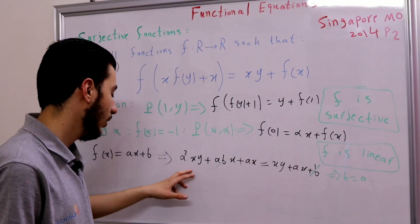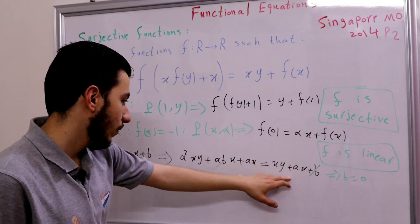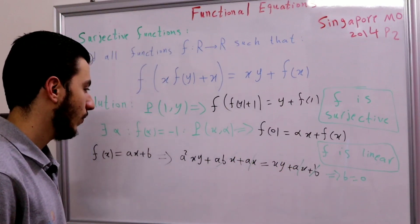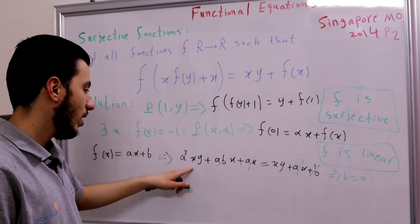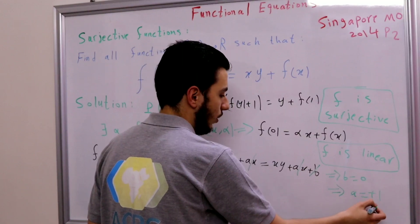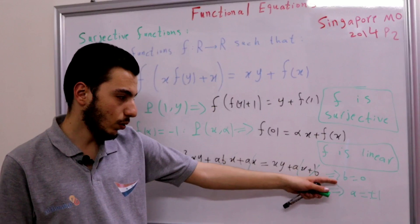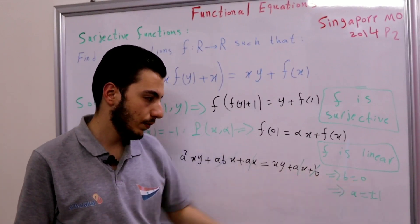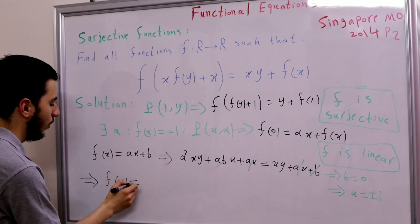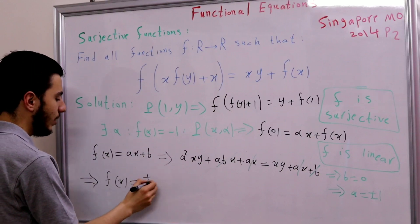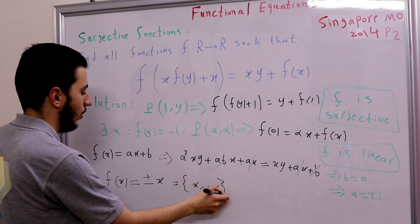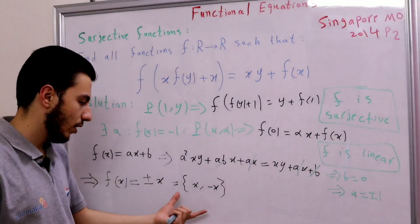Now what is the value of a? With b = 0, we have a²·xy = xy, which means a² = 1, so a = 1 or a = −1. Therefore b = 0 and a = ±1, which means f(x) = x or f(x) = −x. So we have two candidate solutions: f(x) = x and f(x) = −x.